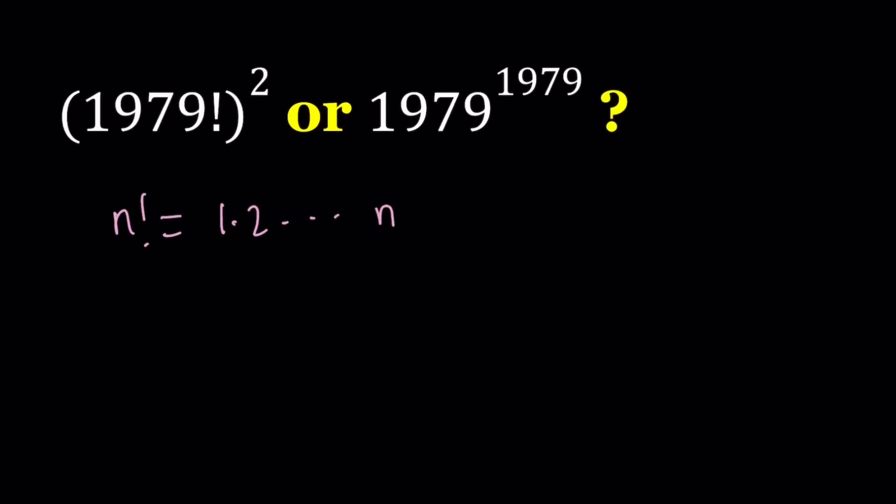Since we have the square, I can use the factorial twice. I can write 1979 factorial as 1 times 2 times 3 dot dot dot all the way up to 1979. But I could also write it as 1979, 1978, dot dot dot, 3, 2, 1. We can write it backwards or forwards. Now here's what we're going to do - pair these up in a nice way.